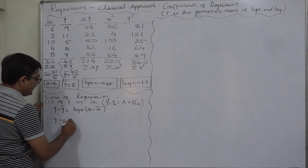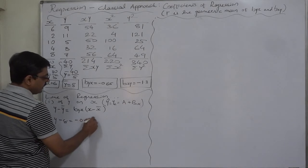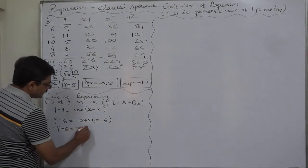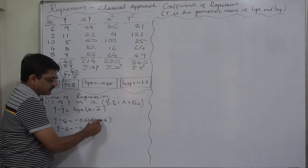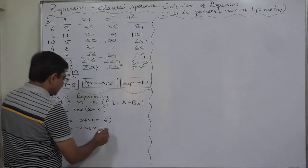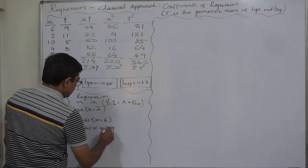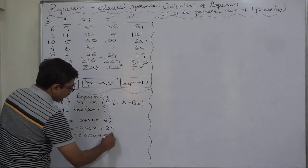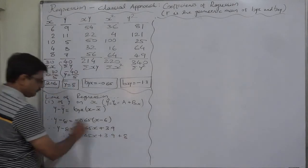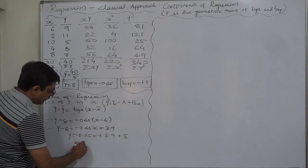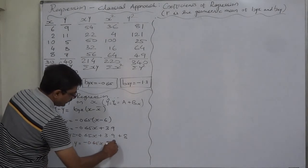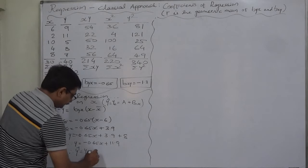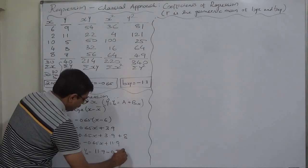Substituting our values: y minus 8 equals minus 0.65 times x minus 6. Simplifying: y minus 8 equals minus 0.65x plus 3.9. Therefore y equals minus 0.65x plus 3.9 plus 8, and ultimately y-cap equals 11.9 minus 0.65x.